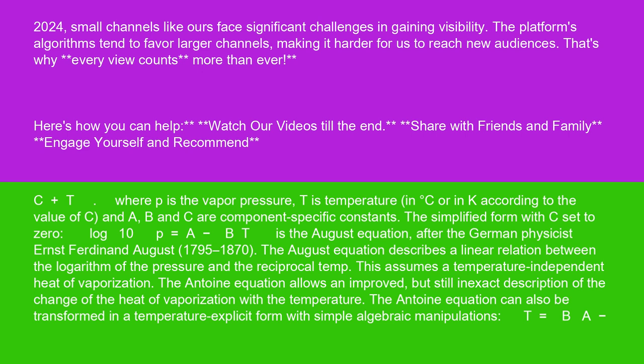The simplified form with c set to zero, log 10p equals a minus bt, is the August equation, after the German physicist Ernst Ferdinand August, 1795-1870.